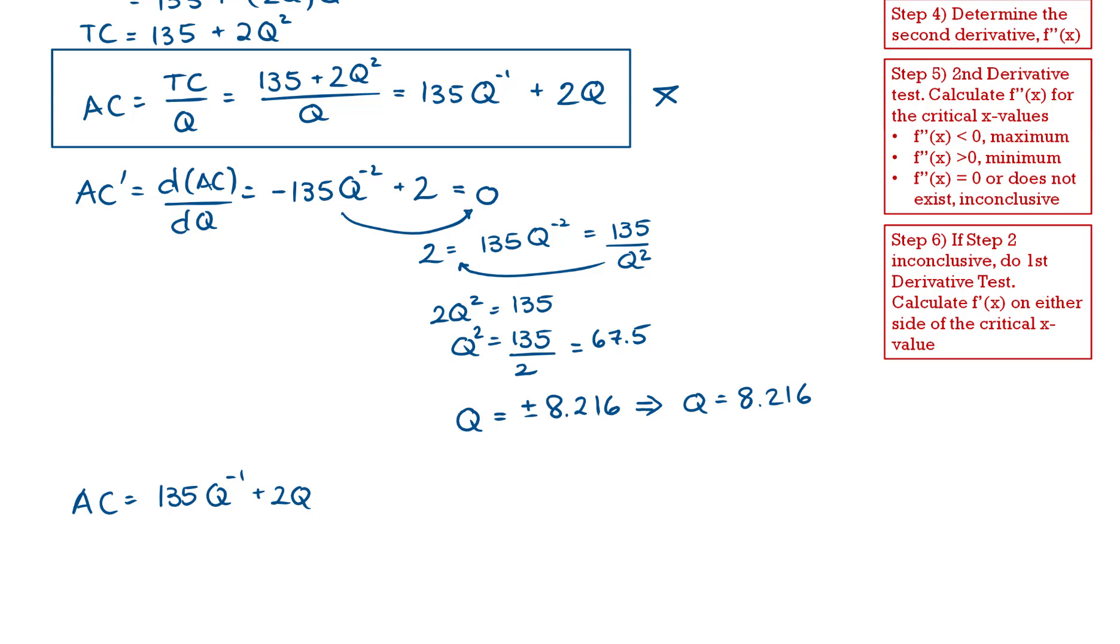That's our formula up here for the average cost. So I'm going to substitute Q is equal to 8.216 into this formula. And I get 135 times 8.216 to the power of negative 1 plus 2 times 8.216. And this gives me 32.863.